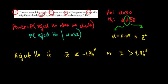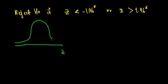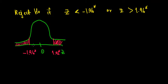Let's draw this on a graph and work with it. We have the standard normal distribution with a mean of zero, and the critical values are 1.96 and minus 1.96. We know that we would reject the null hypothesis if the z-values fall in these shaded regions.